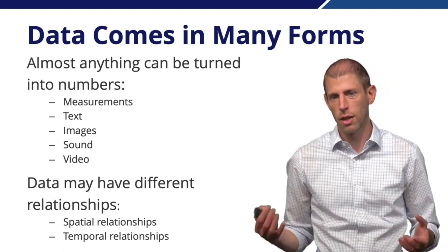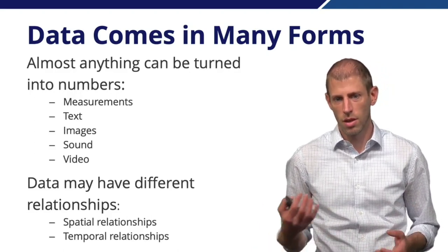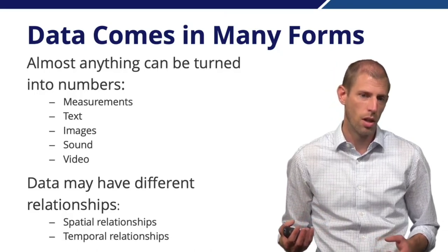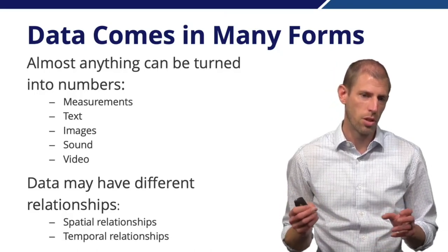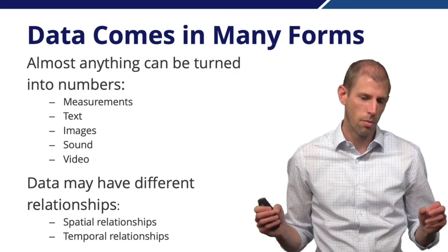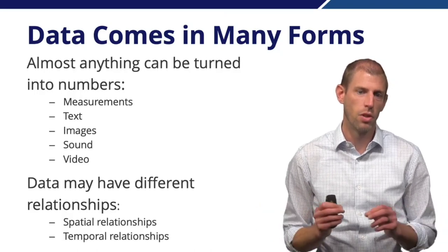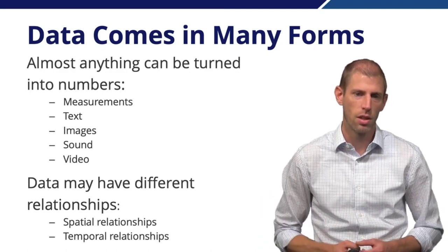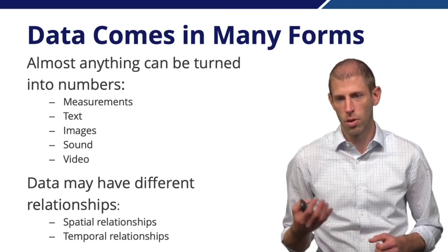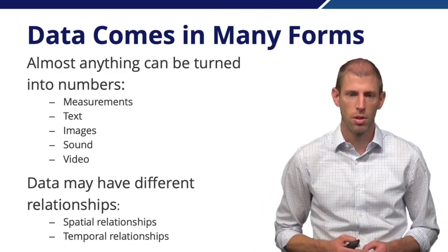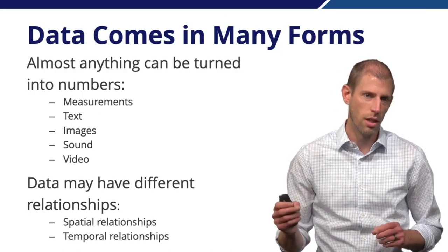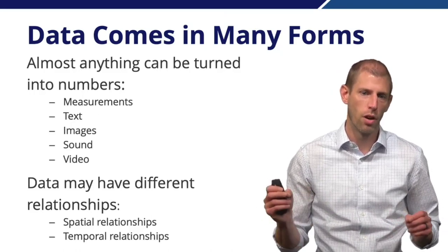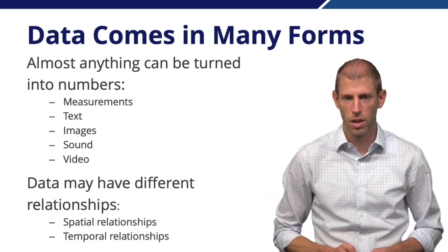Data can also have different types of relationships. Common relationships found in data are spatial relationships, where data points are related through some concept of nearness or farness in space or location. Data can also have temporal relationships, where points are related through time and through how near or far they are to each other in time.